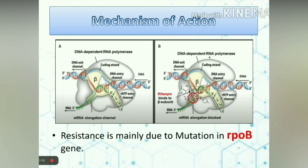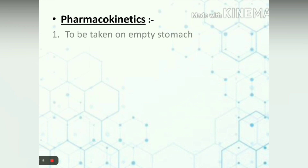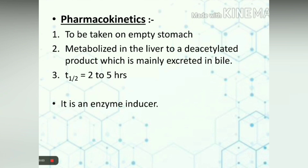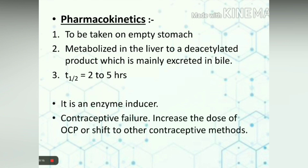Pharmacokinetics: it is to be taken on an empty stomach because food inhibits its absorption. It is metabolized in the liver to a deacetylated product, which is mainly excreted in bile, and it undergoes enterohepatic circulation, responsible for its variable half-life of 2 to 5 hours. It is an enzyme inducer. Previously, we saw that isoniazid is an enzyme inhibitor, so if combined, they balance each other's effect theoretically, but in practice the effect is variable. Rifampicin also induces metabolism of contraceptive pills, leading to contraceptive failure, so an increase in dose of OC pills or a shift to other contraceptive methods is recommended.